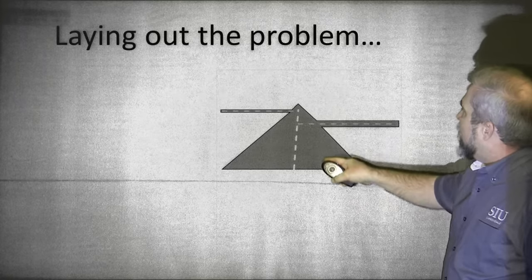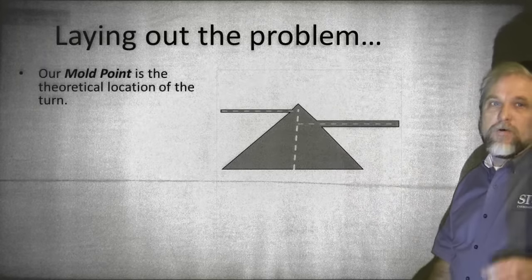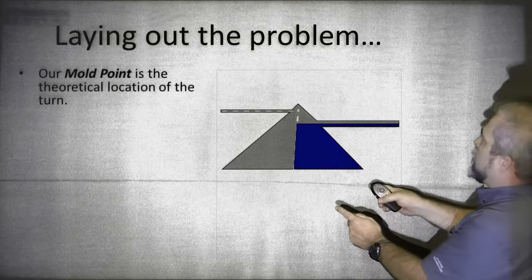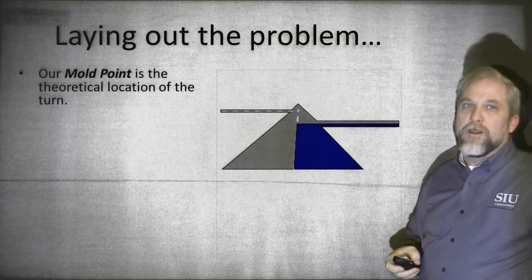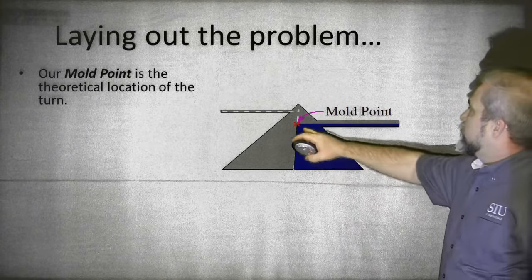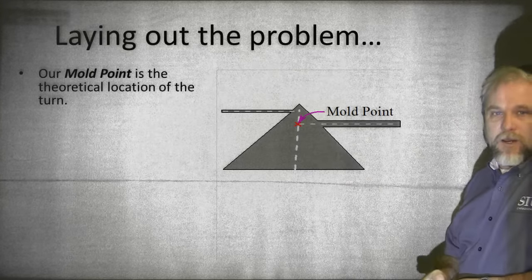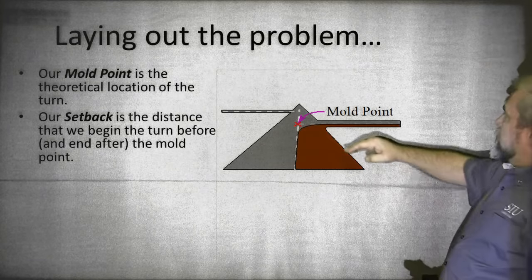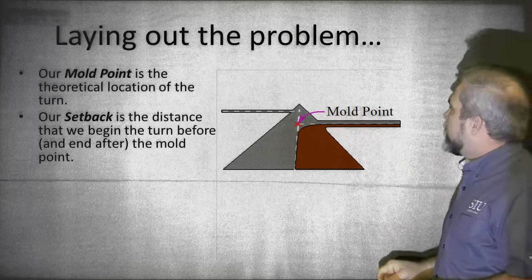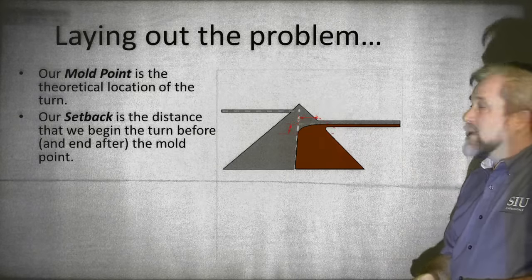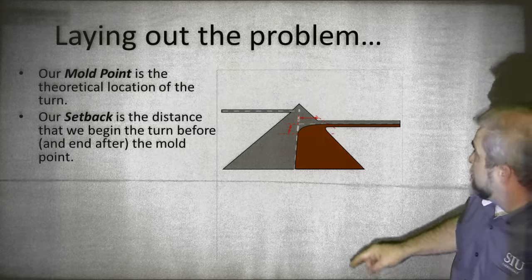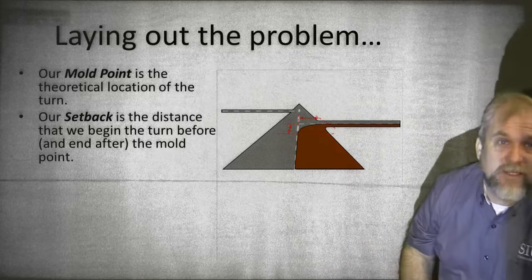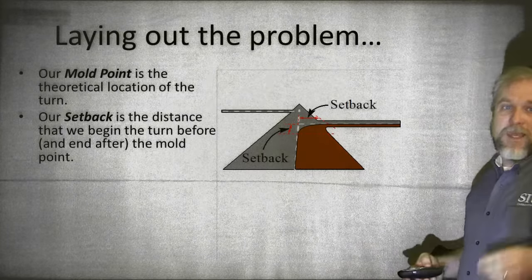We're going to hang a right at the first right. The mold point is the theoretical location of the turn. In our theoretical world, we go right up there and then suddenly we turn — that gives us a mold point, which is the theoretical point where we make the turn. In the real world, though, we begin the turn before we get to the turn and end the turn after. And that leads us to the setback. The setback is that distance before and after the turn, and luckily it's the same number for both cases.